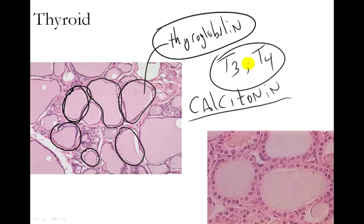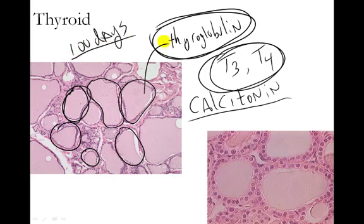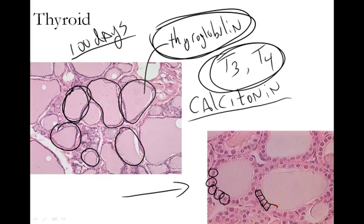T3 and T4 are responsible for increasing metabolic rate and cellular activity, which helps regulate body temperature, etc. Thyroglobulin is the storage form of T3 and T4, and your thyroid stores about a hundred-day supply of thyroid hormone as thyroglobulin inside the thyroid follicles. If we take a close-up, high-magnification look at one of these follicles, you'll notice that they are lined with simple cuboidal epithelium — a single layer of cuboidal cells. So look for a follicle filled with the colloid thyroglobulin, lined with simple cuboidal epithelium. Those are your tips for recognizing the thyroid gland.